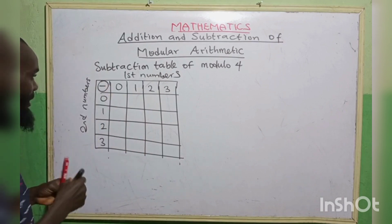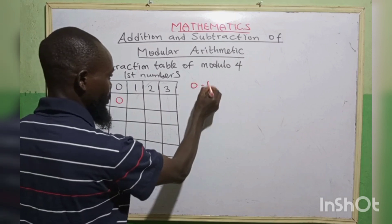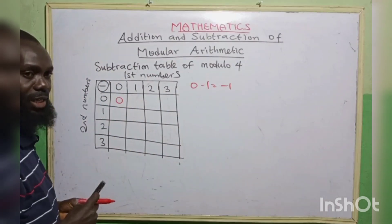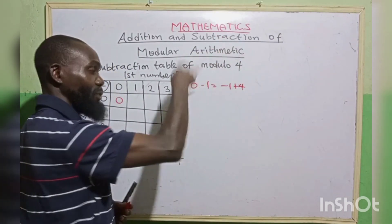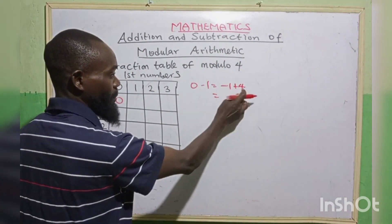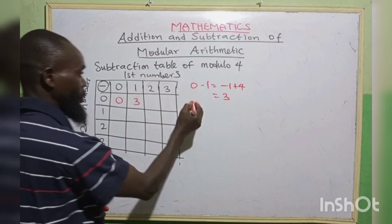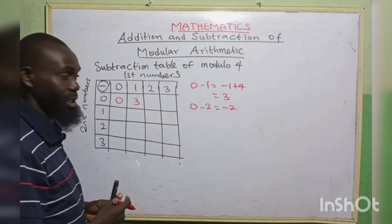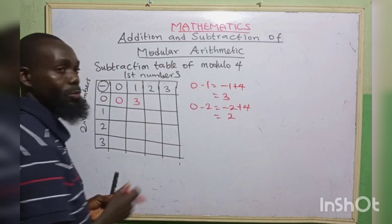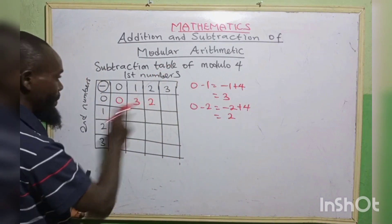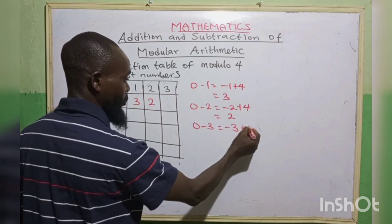Let's start. 0 minus 0 is 0. 0 minus 1 gives minus 1, and we cannot write minus 1. What we do is add the modulo: minus 1 plus 4 gives 3, and 3 is not up to the modulo, so we write 3. 0 minus 2 is minus 2 — we cannot write that, so minus 2 plus 4 gives 2. 0 minus 3 is minus 3 — add modulo 4 to get 1.